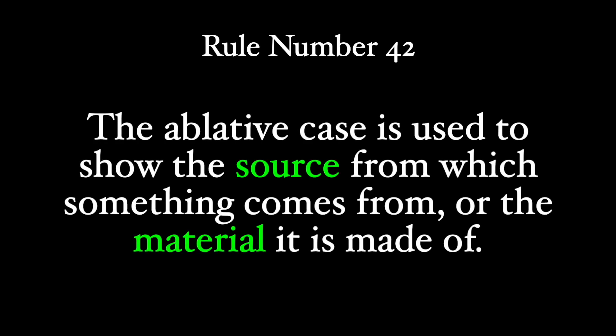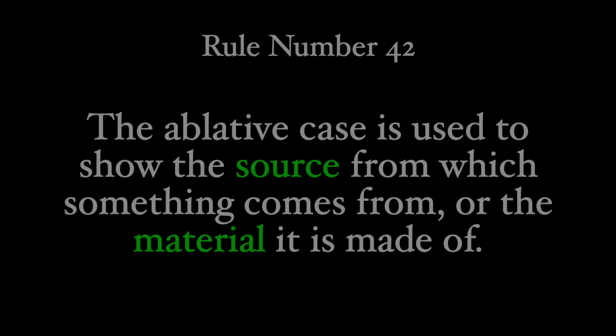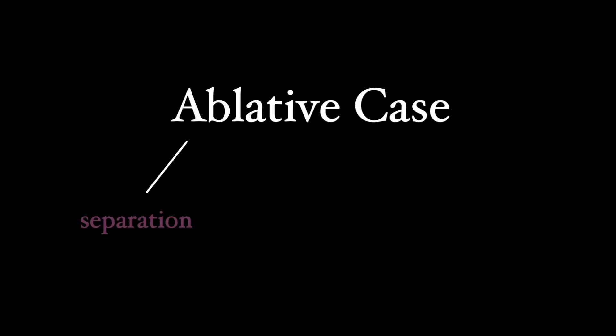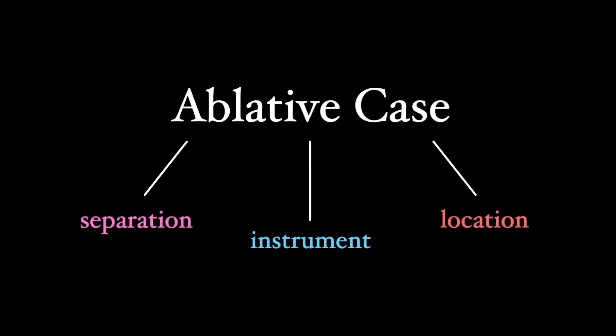Rule number 42. The ablative case is used to show the source from which something comes from or the material it's made of. The ablative case in Latin is a combination of three different functions that show separation, instrument, and location. We are going to talk about a type of the separative function with the ablative of source or material.